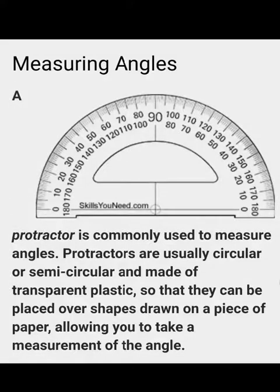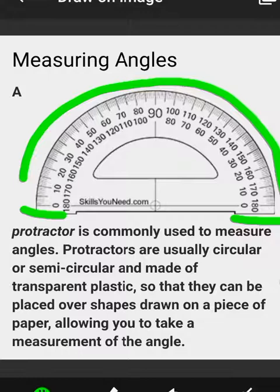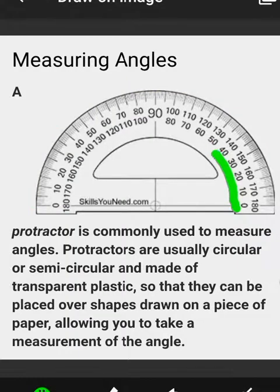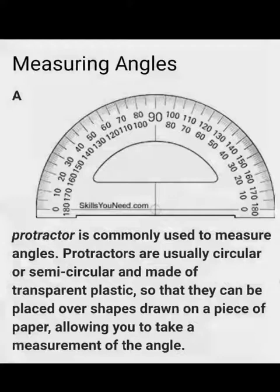Now, we use a protractor to measure angles. A protractor is commonly used to measure angles and is usually made of semi-circular shape in transparent plastic. On the protractor you can see two scales — numbers 0 to 180 degrees are mentioned on the outer scale, with 0 on the bottom line, going clockwise. Inside, the same numbers 0 to 180 degrees are mentioned going anti-clockwise. We use these numbers to measure angles.